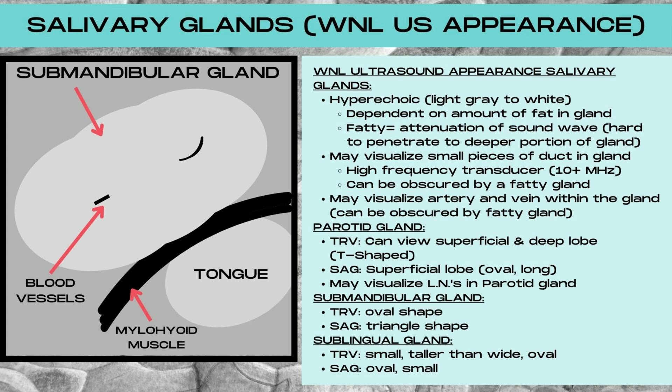You may or may not visualize small pieces of the duct in the glands. Usually these can only be seen with a high frequency transducer — 10 megahertz or higher — and these small ducts can also be easily obscured by a fatty gland signal. You also may or may not visualize arteries and veins within the gland, which can also be obscured by a gland that has a fatty signal.